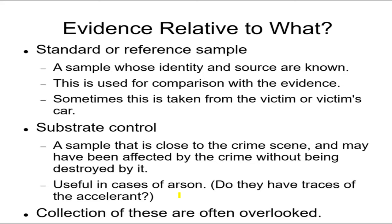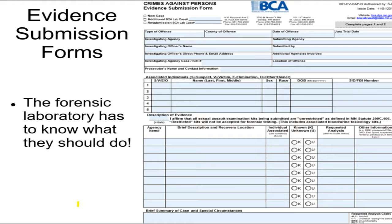In cases of arson, for example, where the fire started, you check if there is an accelerant — say, gasoline — in that place to make it burn faster. But you also have to check the rest of the house, because what if there is gasoline all over the house? What if the person sold gasoline or had gasoline-related projects all over his house? That doesn't prove there was an accelerant used for arson. Check the rest of the house too. You need samples from places other than the exact location of the crime or what you think is evidence, and unfortunately this is often overlooked.